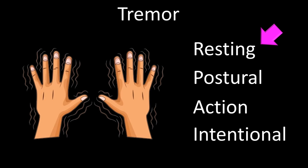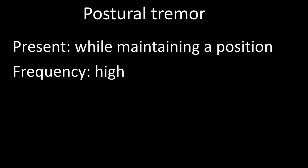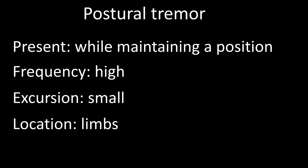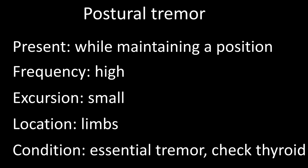After resting tremor, we will talk about postural tremor. Postural tremor is present while maintaining a position. It is a high-frequency tremor, usually eight hertz or above, with a small degree of excursion. It most often involves the limbs and is found in essential tremor — a familial condition — and in hyperthyroidism, among other conditions.